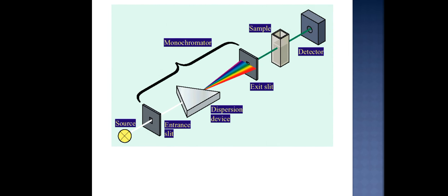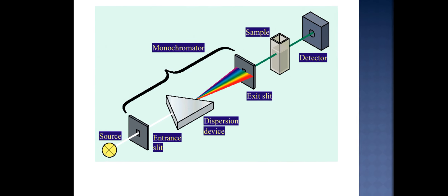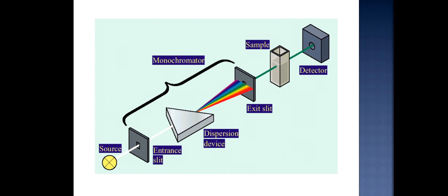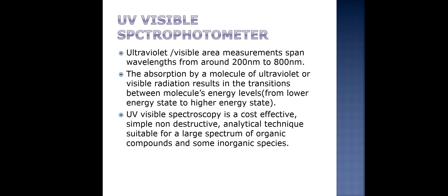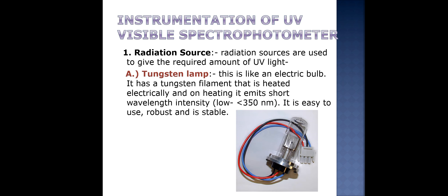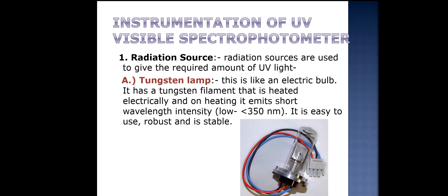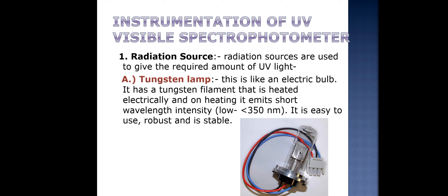These are the basic instruments used in the UV visible spectrophotometer: the source of light, the dispersion device or monochromator, the sample cells, and the detector and recording system. Now let's begin the instrumentation of UV visible spectrophotometer. The first one is radiation source, for which we use 5 types of lamps.